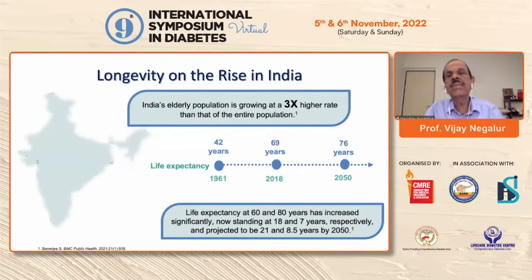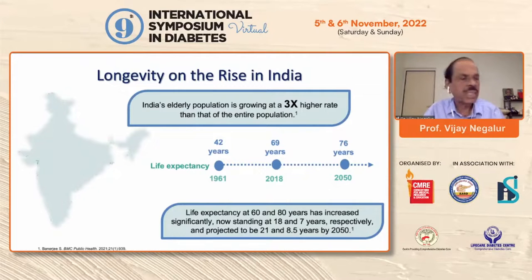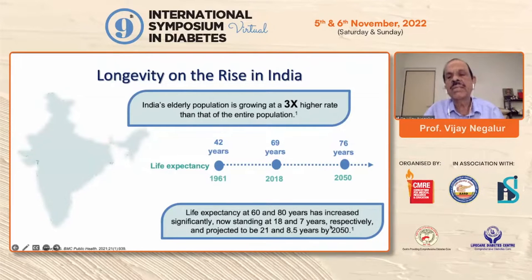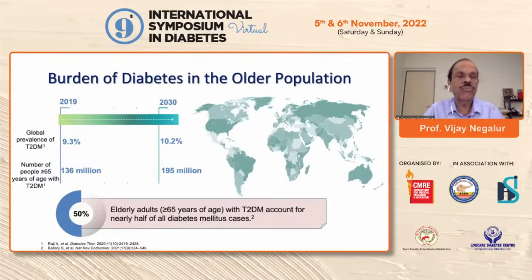This graph shows the rise in longevity in India. In 1961, life expectancy was 42 years; it moved to 69 years in 2018 and is expected to reach 76 years by 2050. The Indian population has shown a threshold rise in the adult elderly population, and we are going to see a large number of the adult population in future.